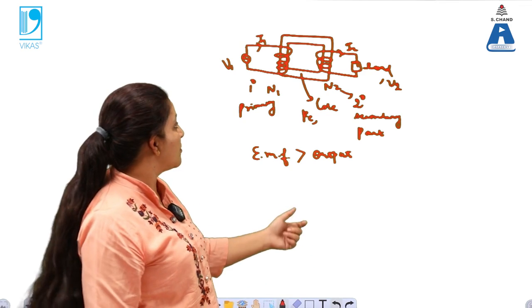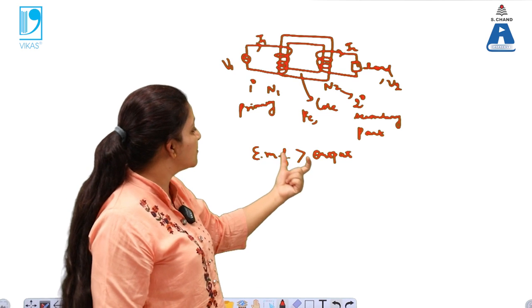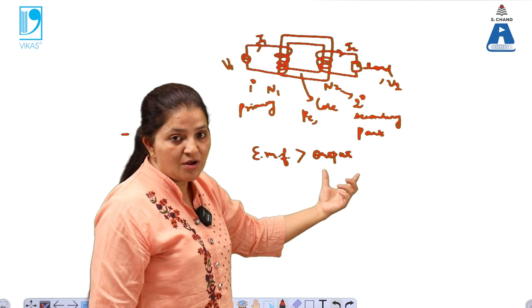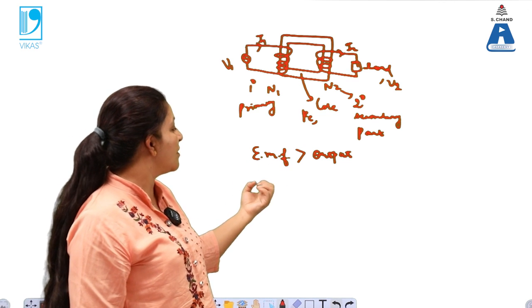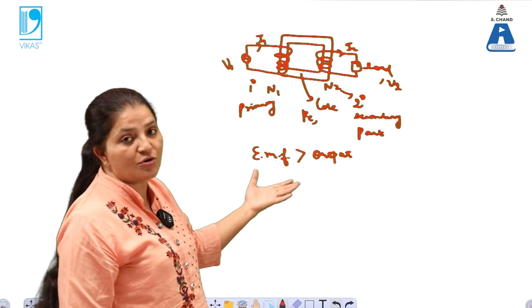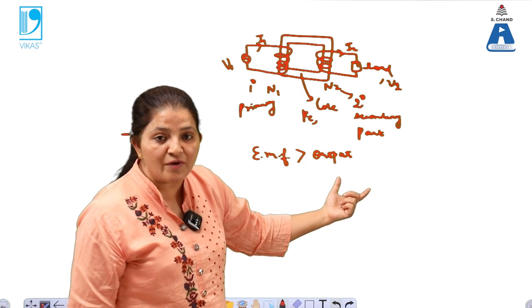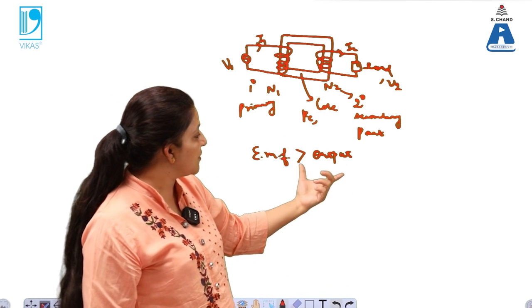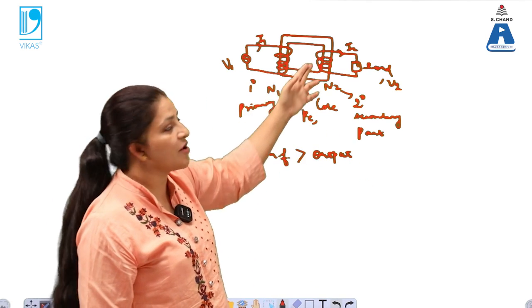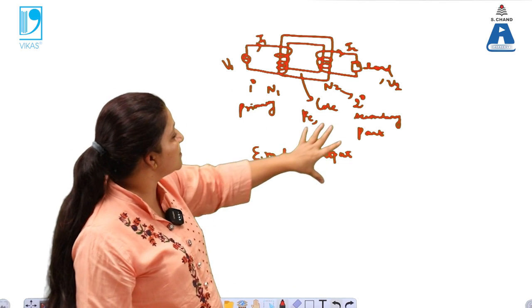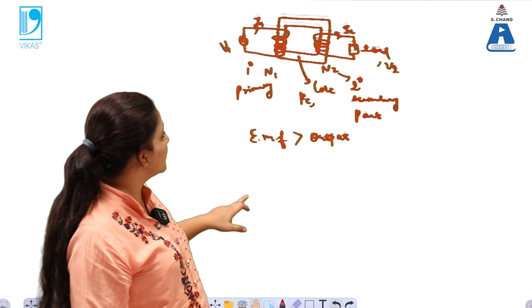Due to some losses in the transformer, the EMF is always more than the output. The induced EMF — the electromotive force — is always more than the output value because some of the EMF or output is lost due to losses. There are a large number of losses present in the transformer.